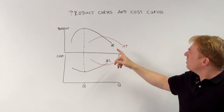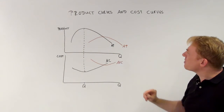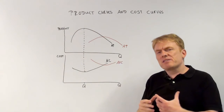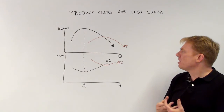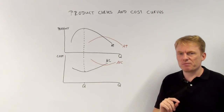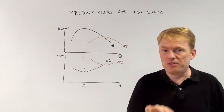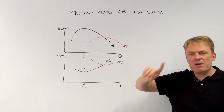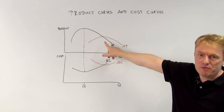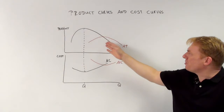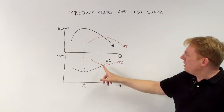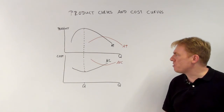There is a second aspect: the average product and the average variable cost. There is an intersection point between average product and marginal product — the maximum of average product is intersected by marginal product. The maximum of average product corresponds to the minimum of average variable cost. Therefore, the point of intersection between average product and marginal product is also the point of intersection between marginal cost and average variable cost.